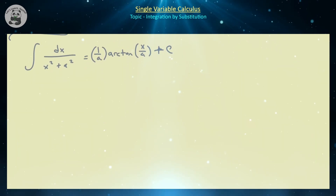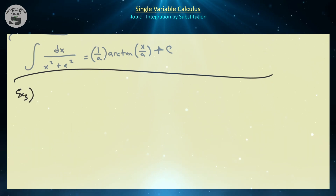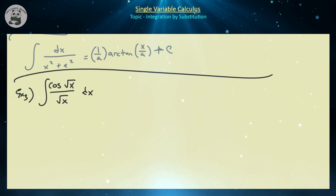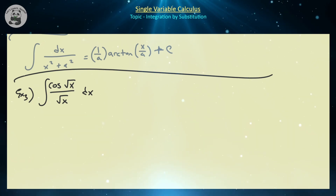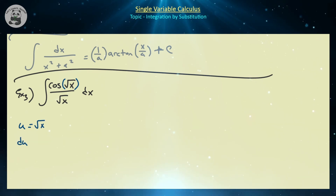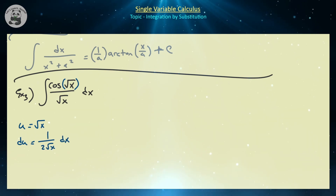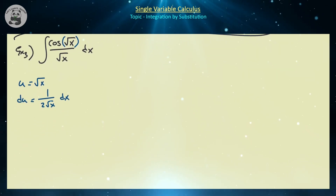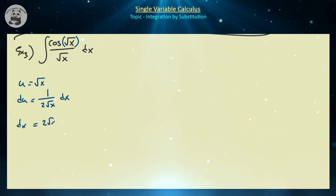Let's do the integral of cosine of √x all over √x dx. We know the derivative of √x is 1 over 2√x, and we have √x on the bottom, so that's a good substitution choice. If you're unsure, try choosing the function inside your composition as u. So we let u equal √x, and du equals 1 over 2√x dx, meaning dx equals 2√x du.